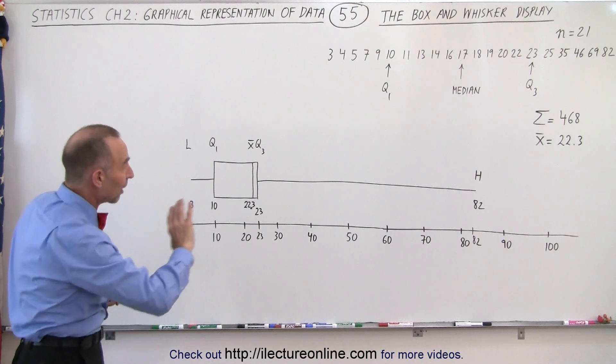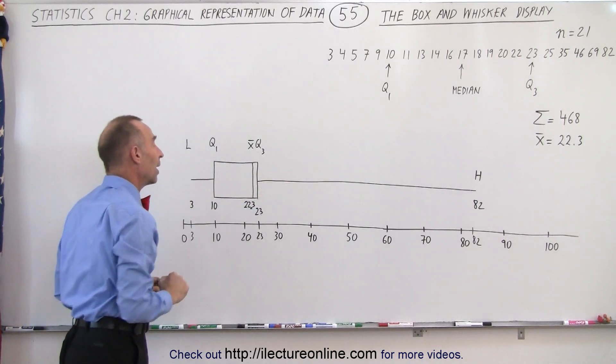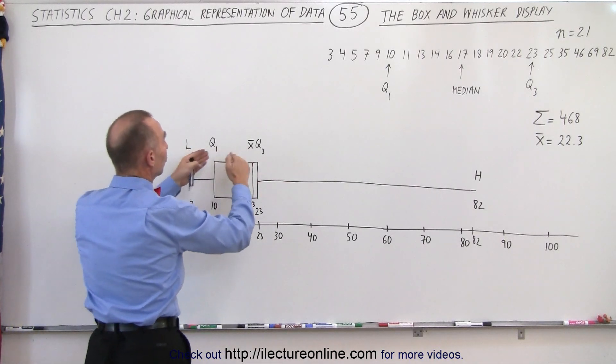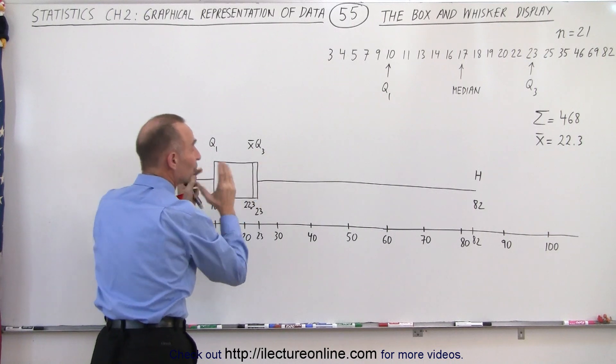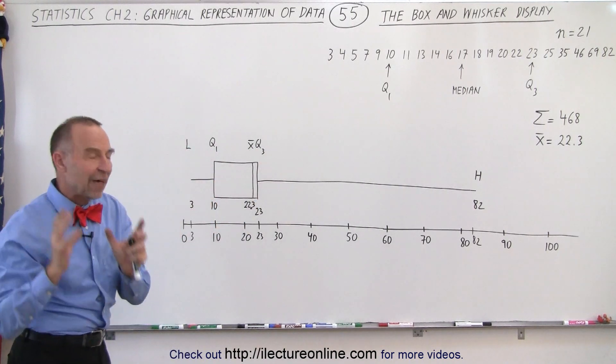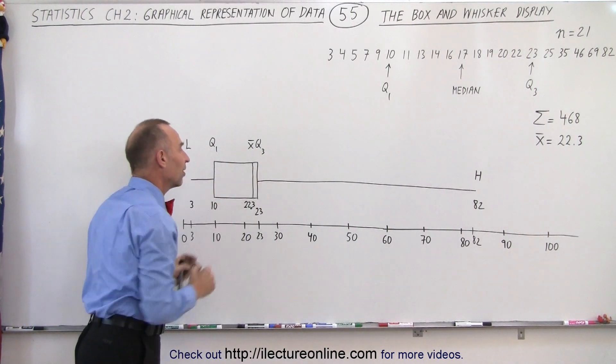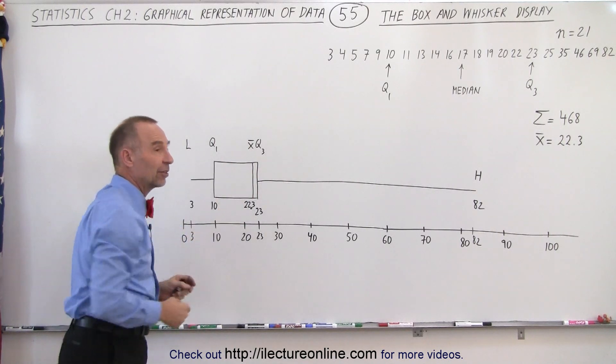So you can see that those big outliers probably threw the average off to the right, which means that the first and third quartile actually give you a much better idea about the values of the middle 50% of the data than the average value.